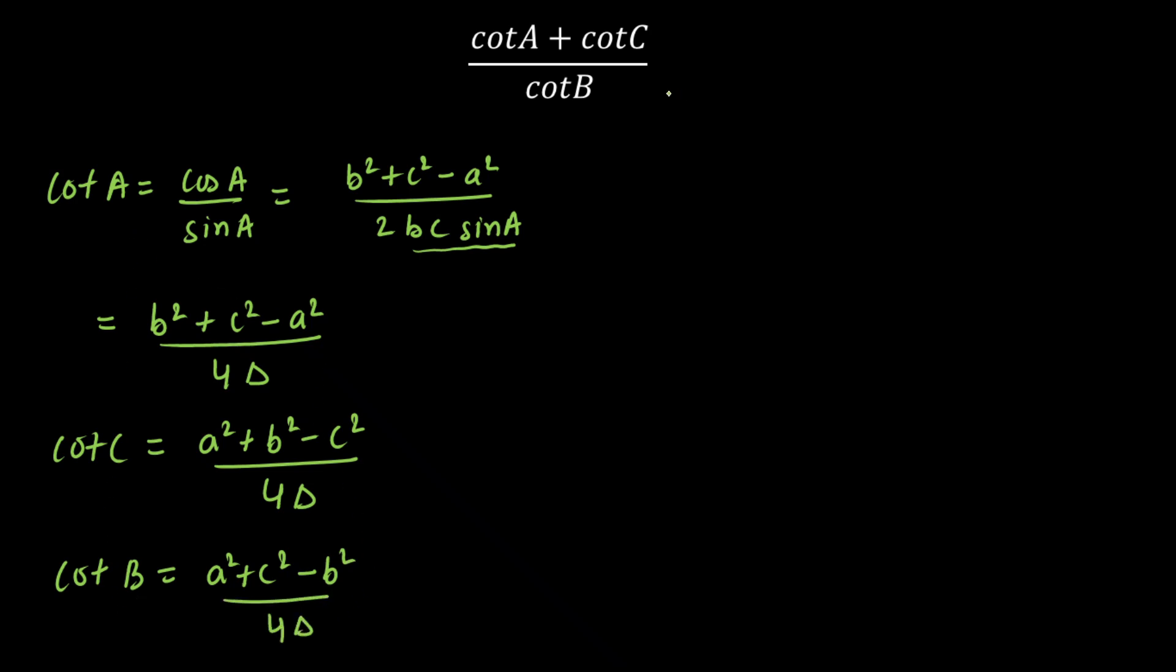Now once I get all the values, I'm going to substitute here. So if you calculate this value, you'll get this as b² + c² - a² upon 4 delta. And you can see denominator is 4 delta. So I can take LCM in the first two, cot A and cot C. So you can clearly see a² and c² will cancel out, only 2b² is remaining. In denominator, we have 4 delta. Similarly, if you put the value of cot B here, you'll get this as a² + c² - b² upon 4 delta.